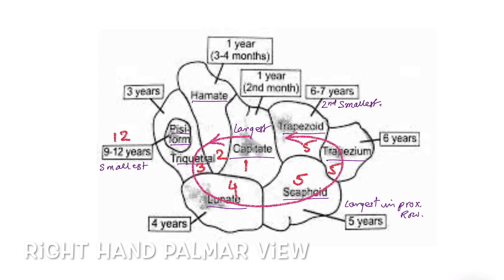The order is anti-clockwise: scaphoid appears before trapezium, trapezium before trapezoid. For precise appearance: capitate appears around two months after birth, hamate appears at three months of life. In the mnemonic, hamate is written as 'two' simply because it appears after capitate and no other bone appears before three years — so in an X-ray of a one- or two-year-old child, you will find only two carpal bones.